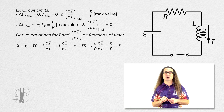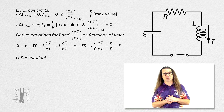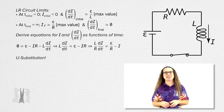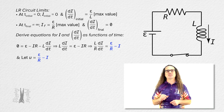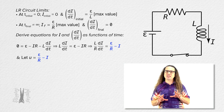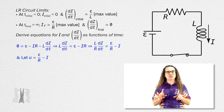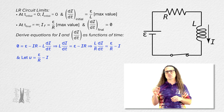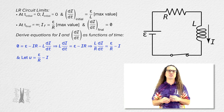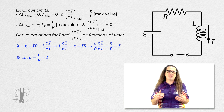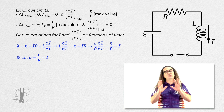Now we are going to use u-substitution. We let the variable u be equal to emf divided by resistance minus current. I will say that these initial steps, including the u-substitution, are the ones which are the easiest to forget in this derivation. So I do suggest you indicate somehow in your lecture notes to specifically remember those initial steps.